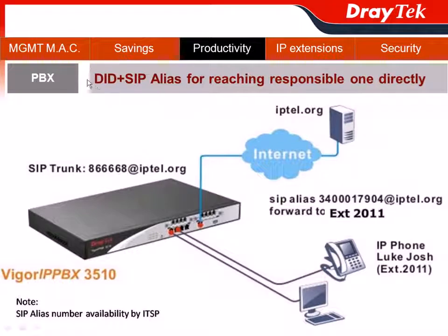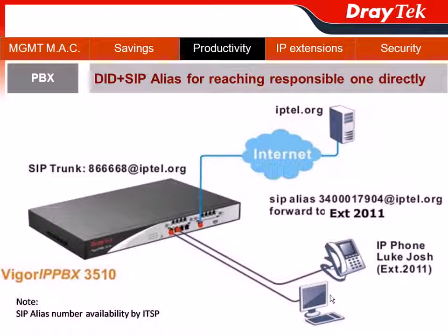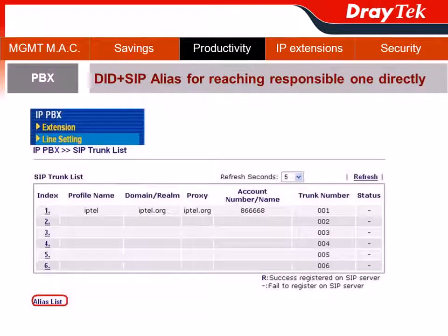We will introduce direct inward dial plus SIP alias, for reaching a responsible person directly even via SIP code. SMB is registered with one SIP account at IPTEL. The actual SIP account number is 8468 at IPTEL.org, and IPTEL provides a bunch of SIP alias numbers to XYZ company. The system admin would like to assign SIP alias number 343017904 for forwarding to extension 2011, belonging to Luke George, so Luke can pick up customer calls directly from the SIP trunk.